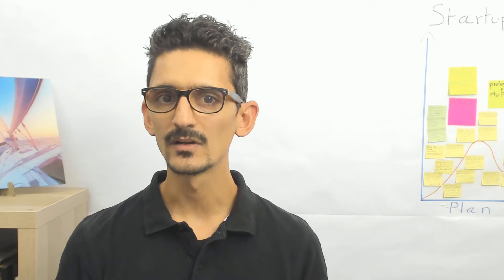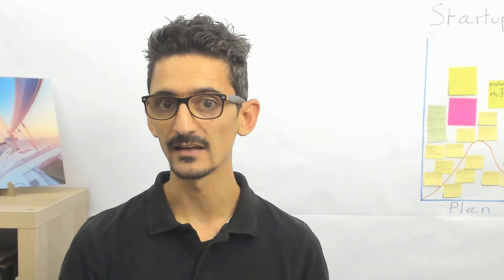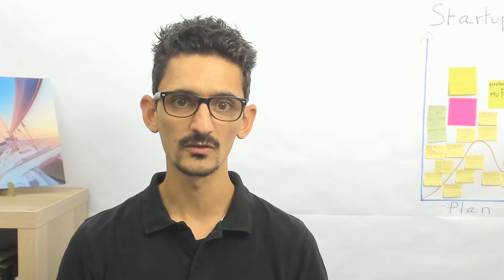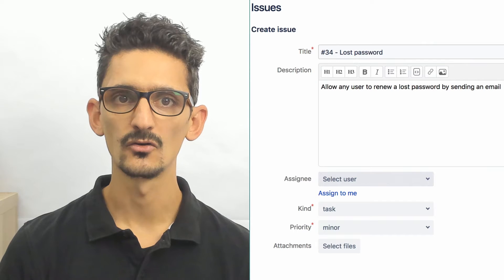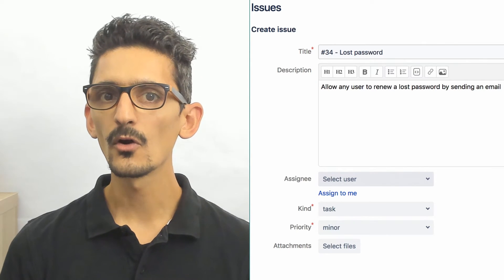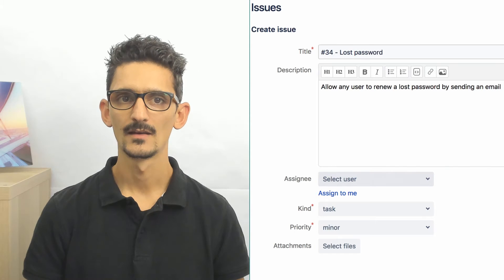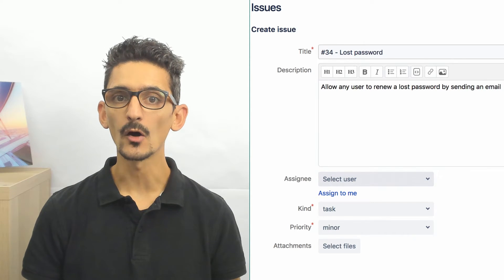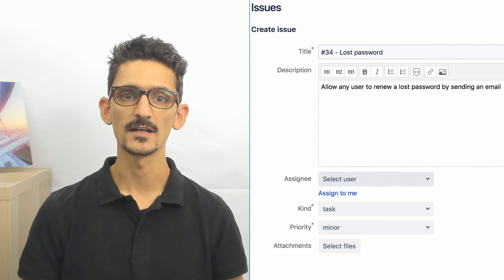This means that to keep better track of things, you can assign numbers to features, like number 34 for the lost password feature. Your developer will add comments in the new code saying that the following new lines of code are to develop feature number 34. Following this methodology, the developer comments will automatically be accessible to the project manager through the project management tool.